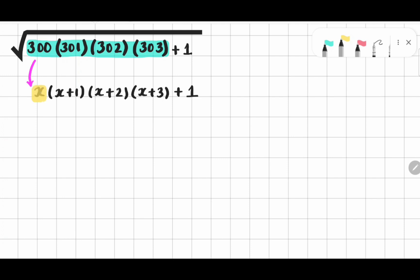I am going to multiply this x and x plus 3. By doing so, we get x square plus 3x. Then I am going to multiply other two factors. We have x square plus 3x plus 2 and 1.